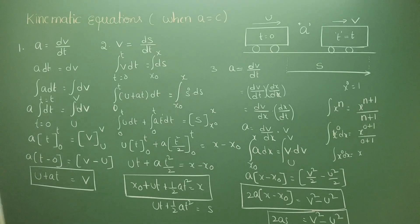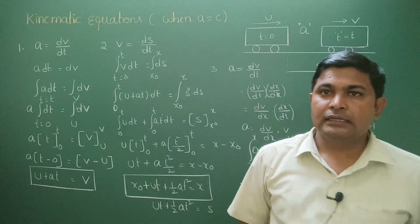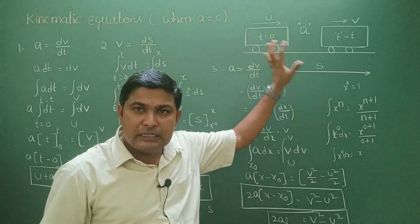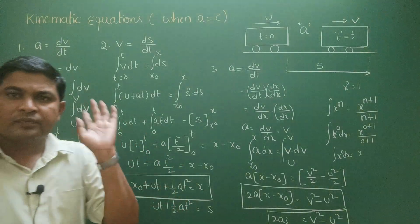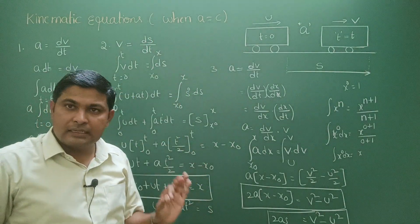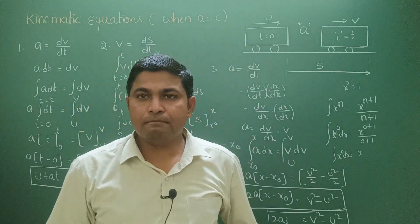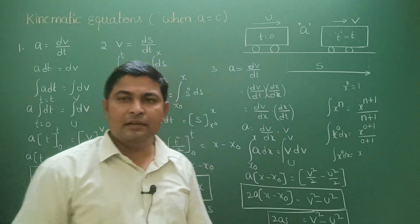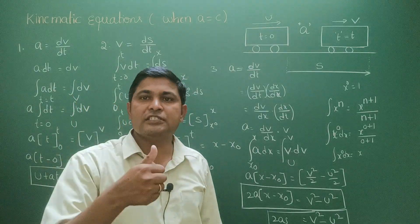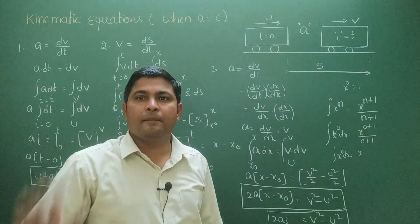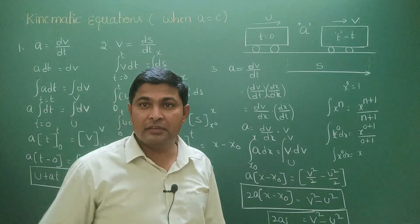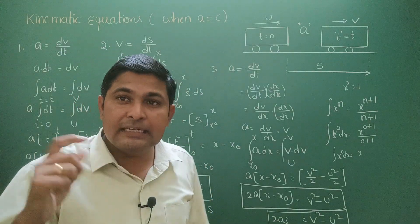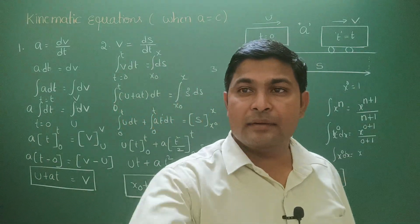We will discuss x₀ further in the next video. So we have derived the three kinematic equations using the calculus method. The key condition is: these equations are valid only when acceleration is constant — meaning the rate of change of velocity is the same every second. In the next video, we will derive the same three equations using the graphical method, and also discuss the fourth equation related to displacement in the nth second. Thank you.